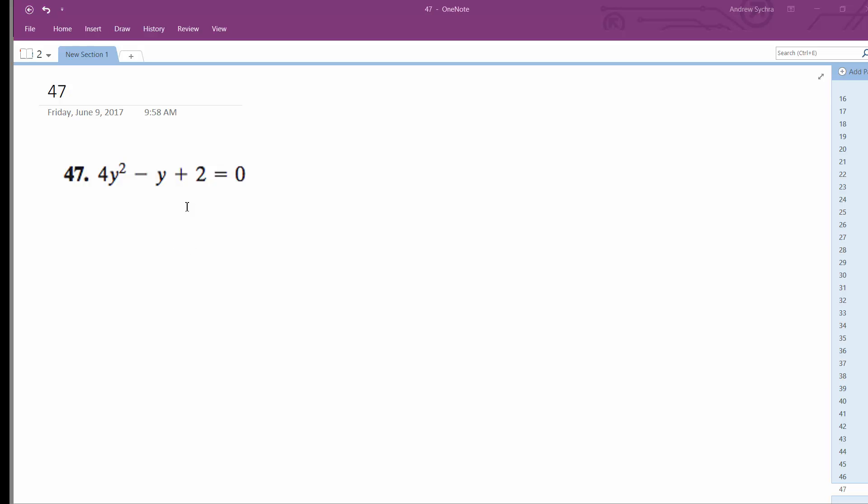Solving this problem, first thing I'm going to do is I'm going to move the 2 to the right so I get 4y squared minus y equals negative 2.